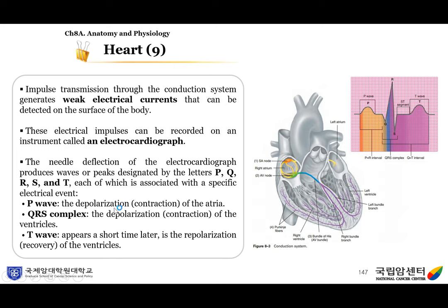The P wave is the depolarization of the atria, which means the contraction of the atria. The QRS complex is the depolarization of the ventricles, representing their contraction. The T wave appears a short time later and represents the repolarization of the ventricles, which means recovery. So: P wave is contraction of the atria, QRS complex is contraction of the ventricles, and T wave is repolarization (recovery) of the ventricles.